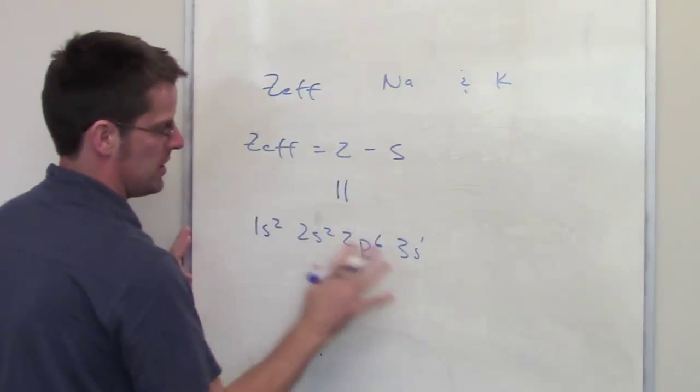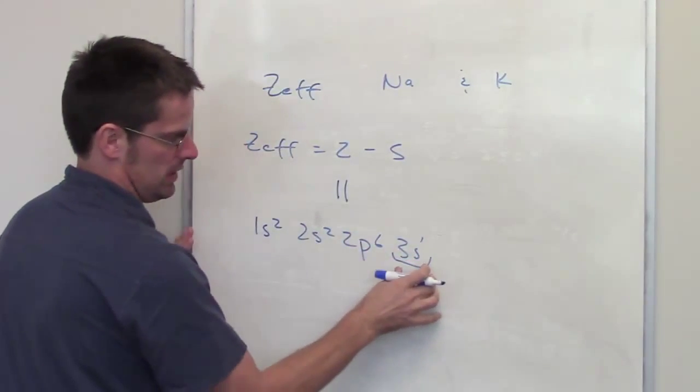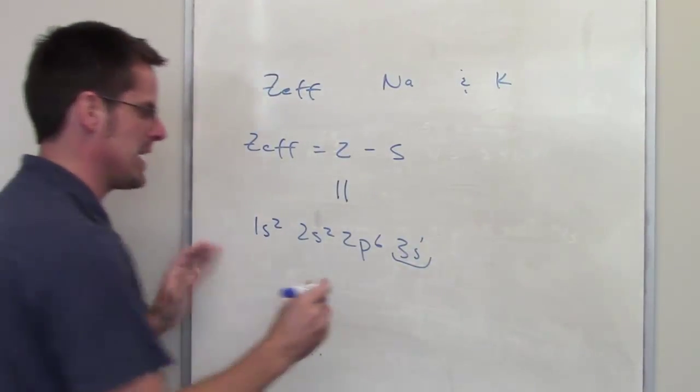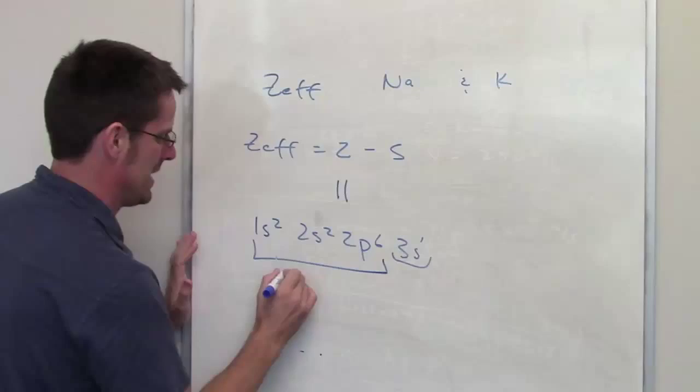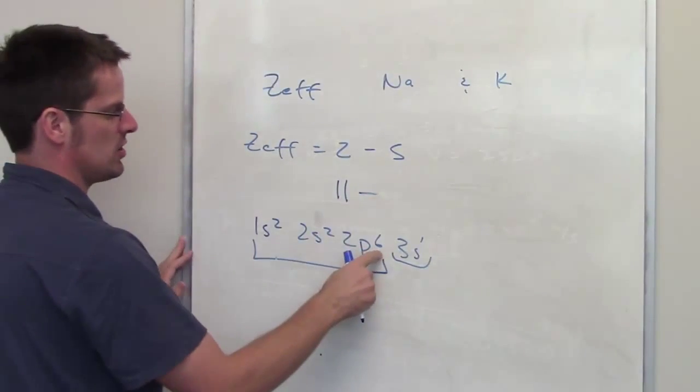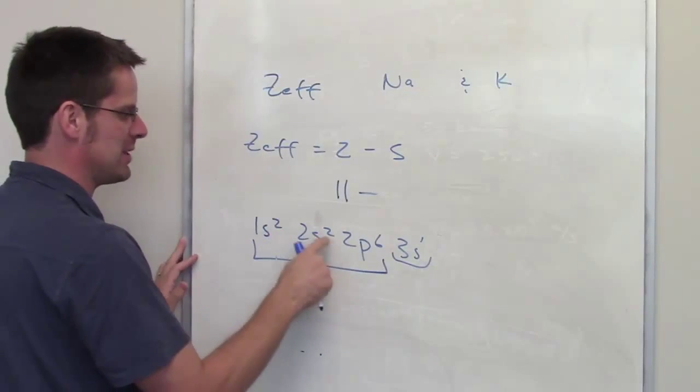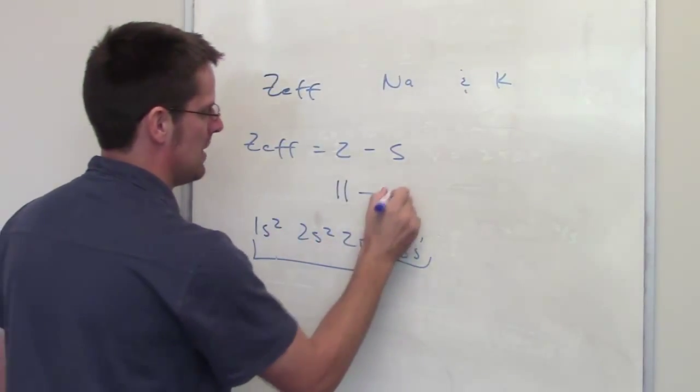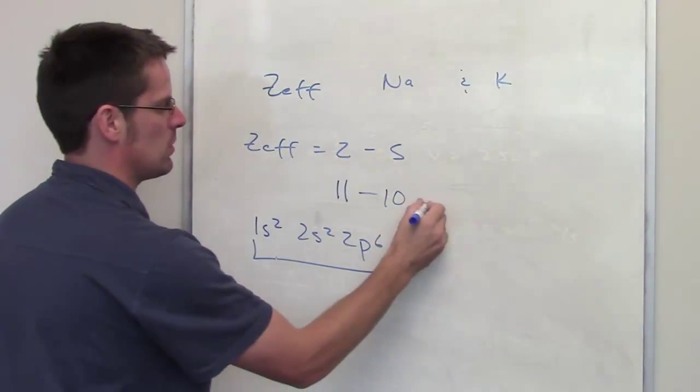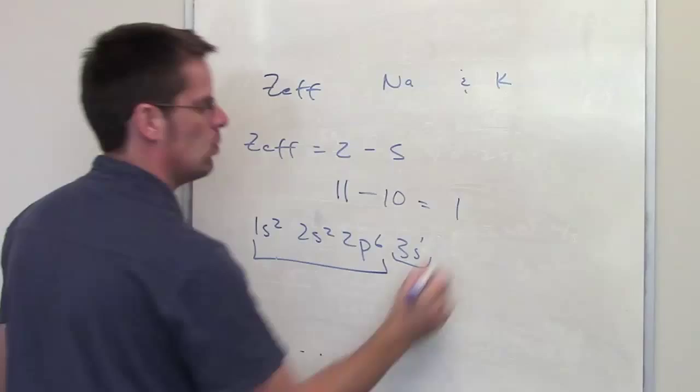The outermost orbital in sodium is this one, which means that is the outermost electron. There's a single electron located in its 3s orbital. All of these are inner electrons. So S is going to be equal to the sum total of all these electrons: 2 plus 2 plus 6 equals 10. So the Z-effective felt by this outermost electron is equal to 11 minus 10, which is 1.